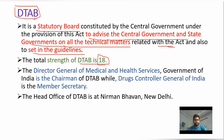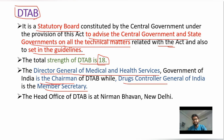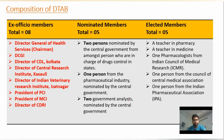There is one chairman and one member secretary in DTAB. The Director General of Medical and Health Services is the Chairman of DTAB, and the Drug Controller General of India (DCGI) is the Member Secretary. The head office of DTAB is located at Nirman Bhawan, New Delhi.